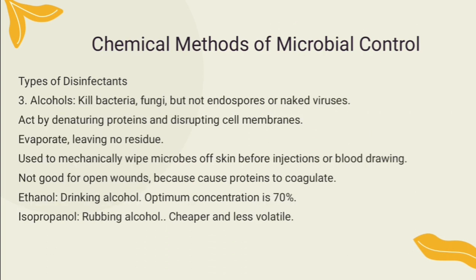Alcohols are useful chemical agents against bacteria and fungi, but have no effect on bacterial spores. The most widely used type is 70% ethyl alcohol or ethanol. Isopropyl alcohol, commonly known as rubbing alcohol, is also a useful antiseptic and disinfectant. Because alcohols evaporate quickly, they leave no residue and are useful in degerming the skin before injections. Isopropanol is cheaper and less volatile than ethanol.